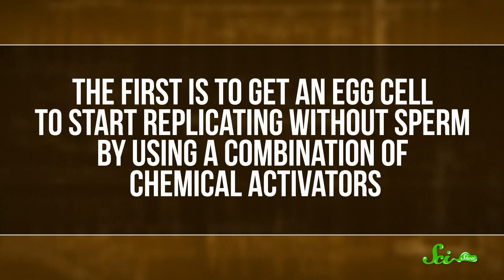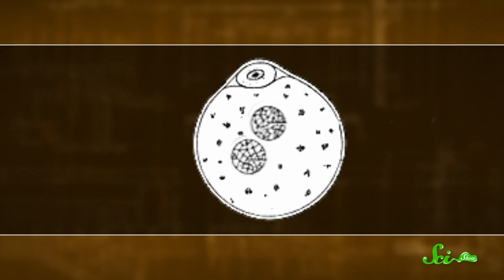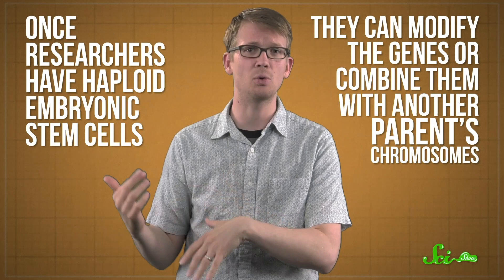And recently, there's been a bunch more research into haploid embryonic stem cells, which are exactly what they sound like—stem cells with only one set of chromosomes. You could make these cells in a lab a couple of different ways. The first is to get an egg cell to start replicating without sperm, by using a combination of chemical activators. The second starts with traditional sperm and egg fertilization. But before they completely fuse to form a diploid cell, scientists remove one of the parent's pronuclei—the container that that parent's set of chromosomes is inside of. Then, once researchers have haploid embryonic stem cells, they can modify the genes or combine them with another parent's chromosomes, like they did in this study.